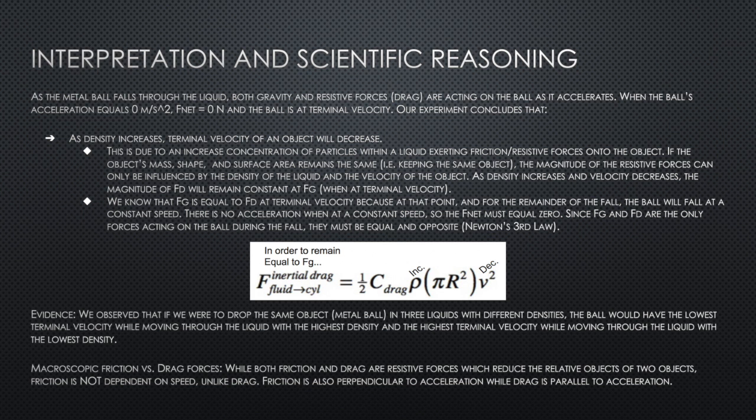If you keep the object's mass, shape, and surface area the same—we did this by dropping the same object over and over—the magnitude of the resistive forces will only be influenced by the density of the liquid and the velocity of the object. As density increases and velocity decreases, the magnitude of the drag force will remain constant at the gravitational force when at terminal velocity.